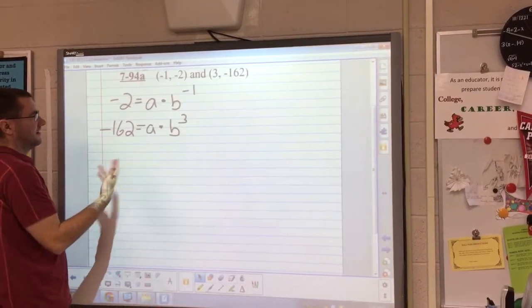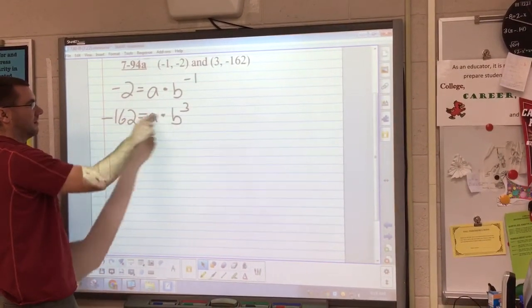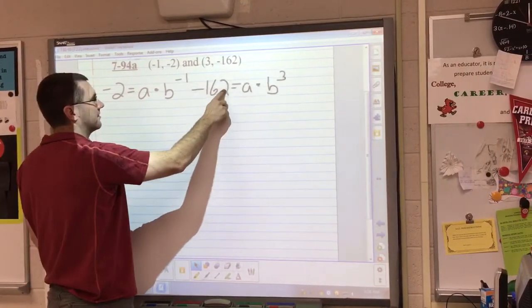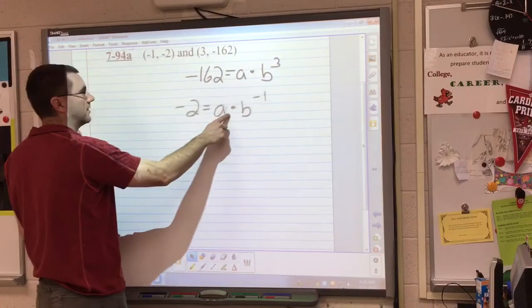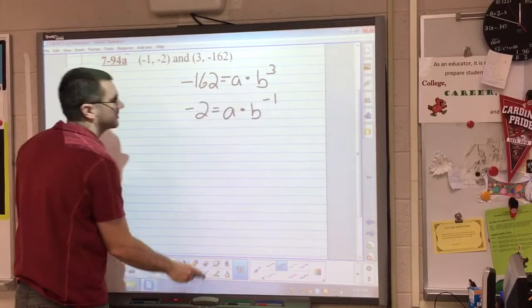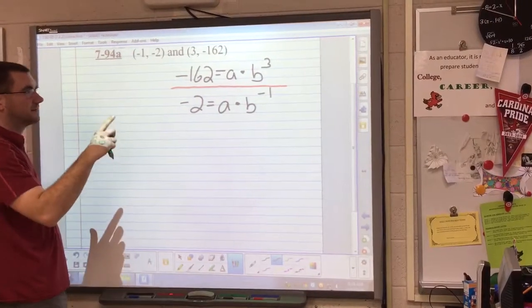In this method, you always want your bigger power on top, so I'm going to take the one with negative 162 and put it on top of my fraction. Then I actually divide these two equations. In linear systems you can add the equations together, but since we're multiplying we can divide our equations.